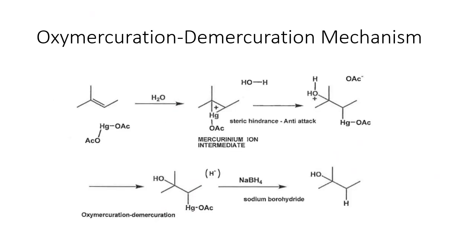Next we'll go through the oxymercuration-demercuration mechanism starting with step one — mercury-2-acetate in water. The first step uses our pi electrons of the alkene, which function as a nucleophile, to attack mercury, which functions as an electrophile. Mercury is a metal that can have a positive charge, but it also has electrons on it. Those electrons can go back and interact with a partial charge forming where a carbocation would form, similar to the bromonium ion mechanism.